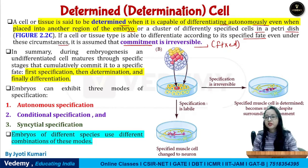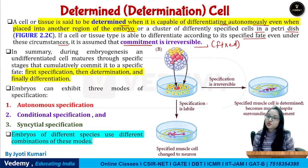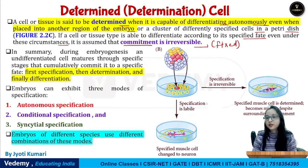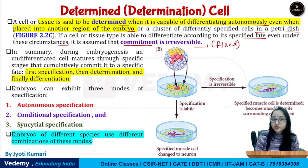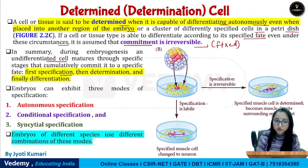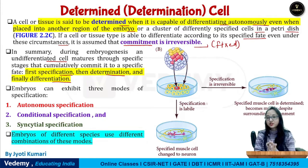So, commitment has two stages: specification and determination. In the specification stage, commitment is reversible. But in the determination stage, commitment is irreversible — the cell is restricted and will not make any fate beyond its own. In summary, during embryogenesis, an undifferentiated cell matures through specific stages that cumulatively commit it to a specific fate: first specification, then determination, then differentiation.